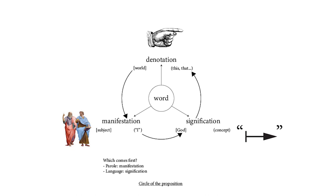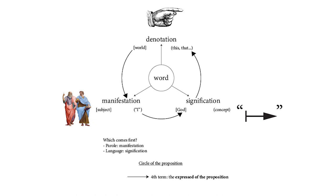Therefore, we need to postulate a fourth term, which Deleuze calls the expressed of the proposition. This fourth term must both be internal to language and induced theoretically. Deleuze says this.